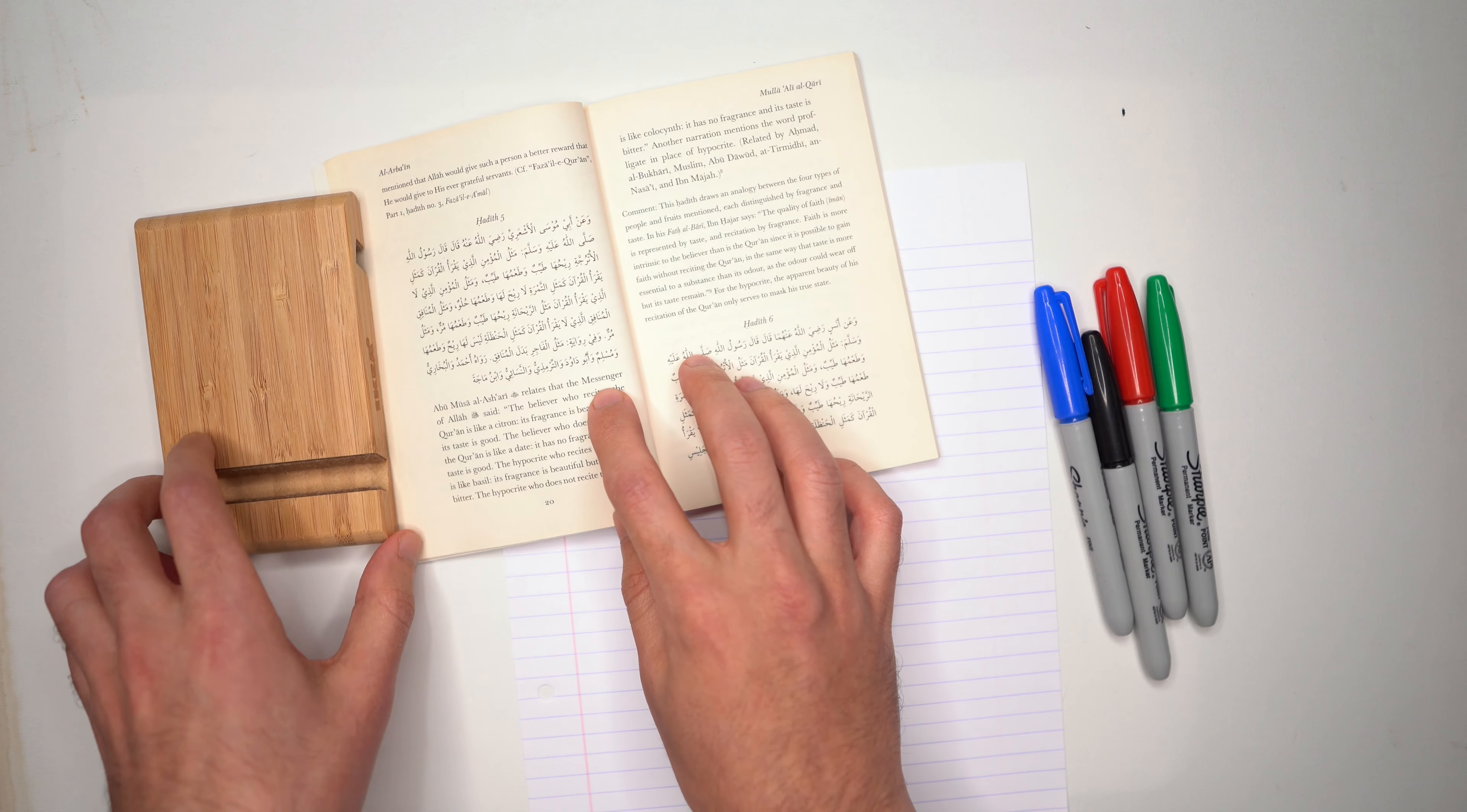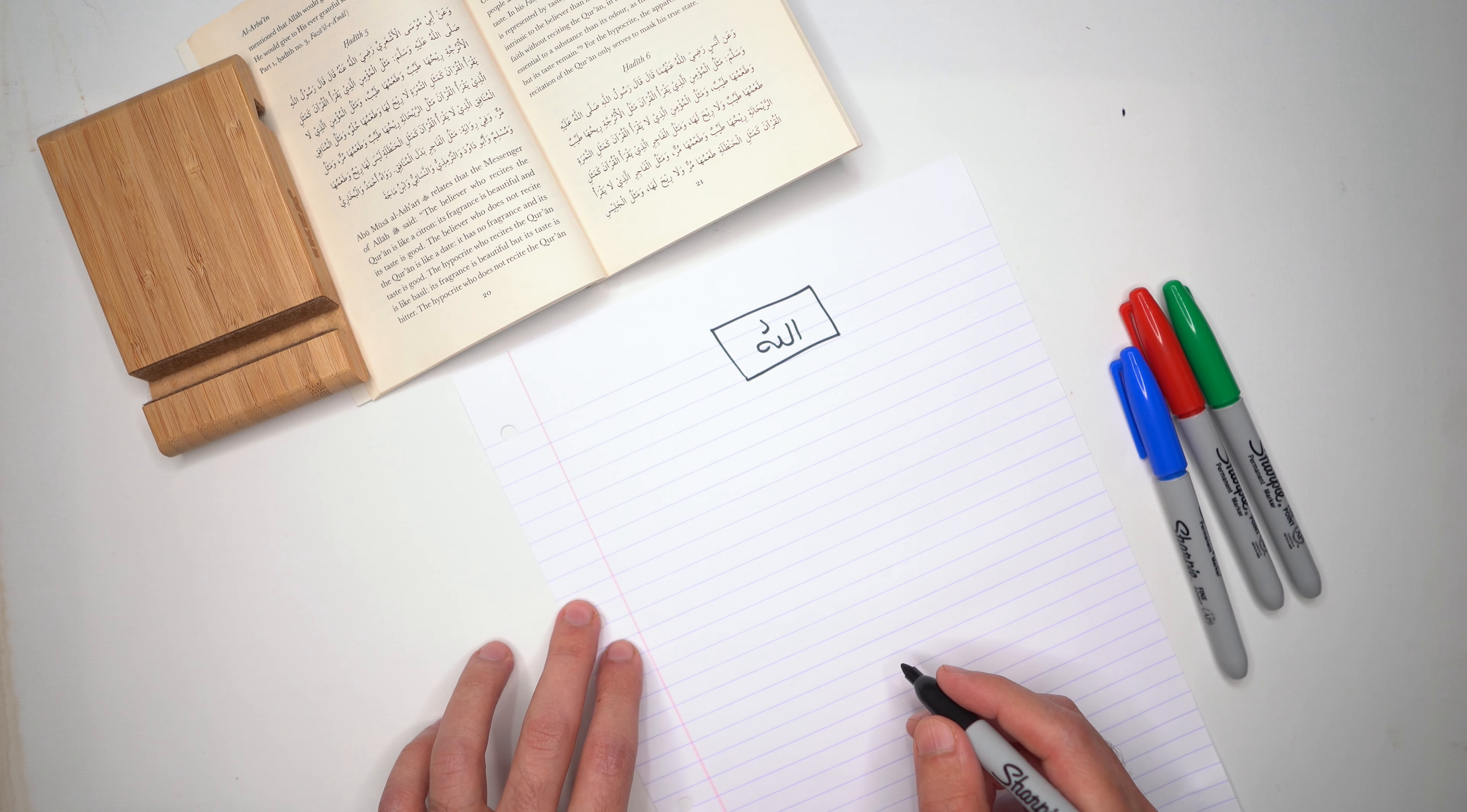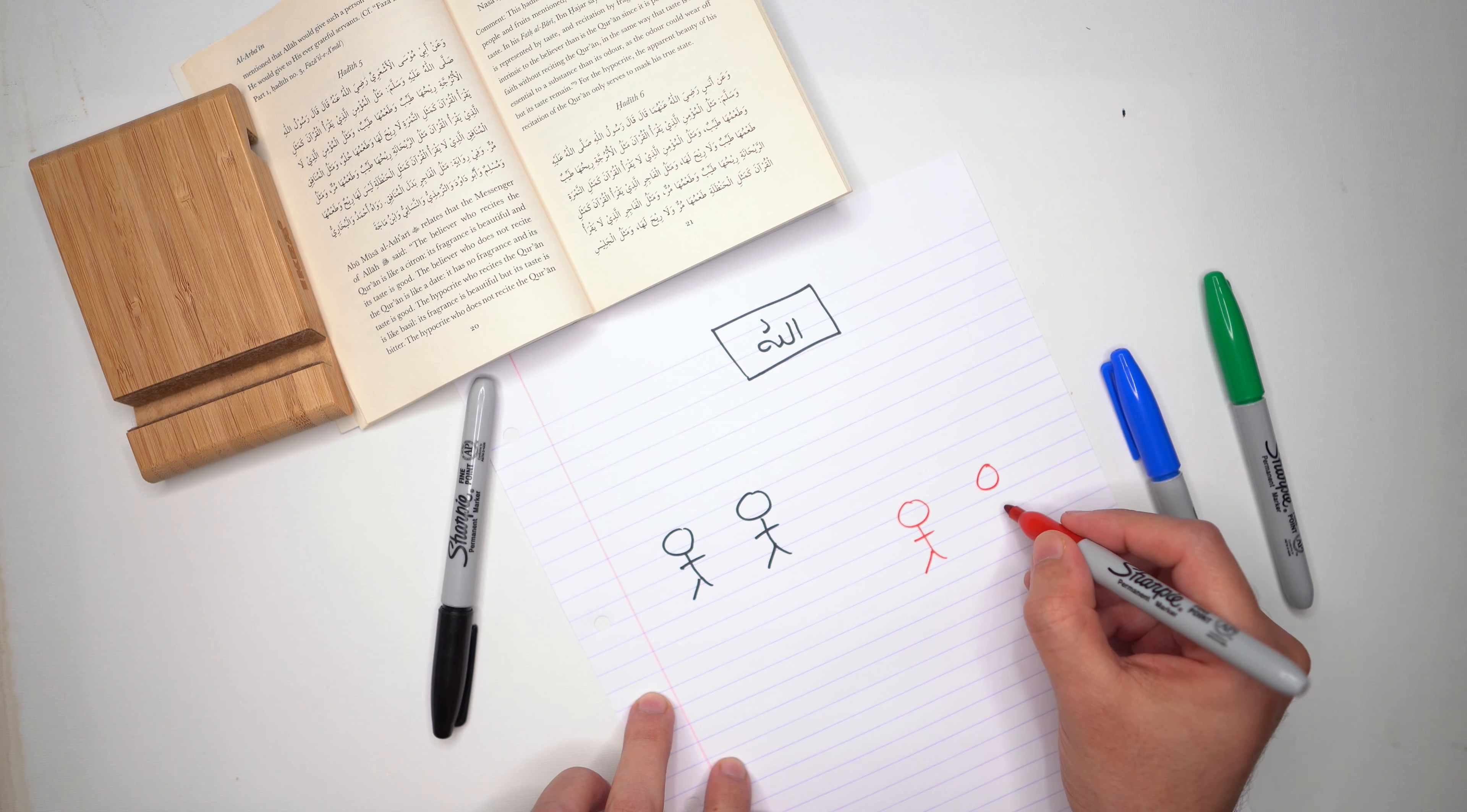The hadith mentions four things related to the Qur'an. The Qur'an is the kalam of Allah subhanahu wa ta'ala. His kalam beautifies anything - the Qur'an beautifies anything, and we've learned this from past hadith as well. The Prophet gave examples of several types of individuals. I'm going to categorize the individuals like this: believer and believer, and then we have hypocrite and hypocrite.